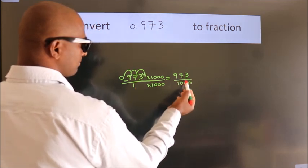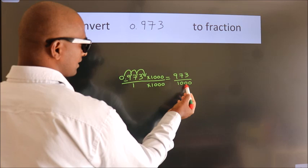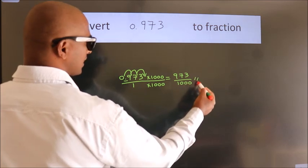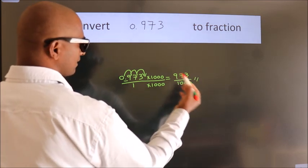This cannot be simplified any further. So, this is our fraction: 973/1000.